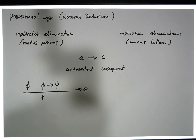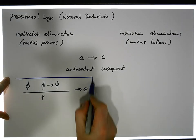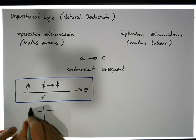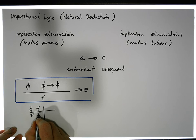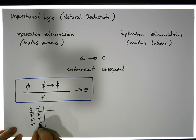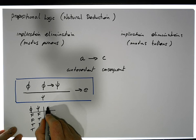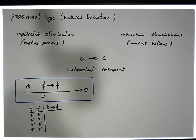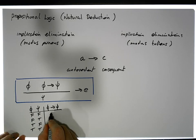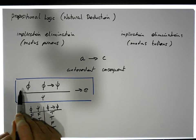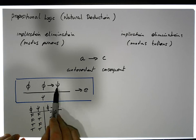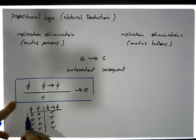Let's look at this in a bit more detail using a truth table. We have φ and ψ with values: false/false, false/true, true/false, true/true. The implication φ implies ψ is only ever false when the antecedent is true and the consequent is false — everywhere else it's true. So if the implication holds, we're in one of the three cases where it's true.